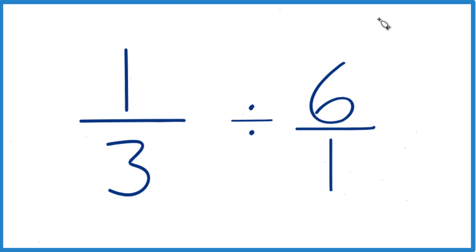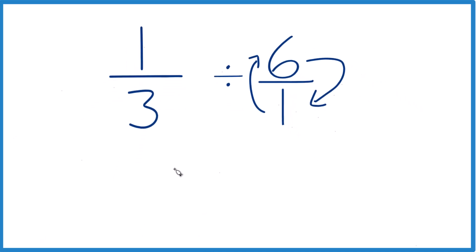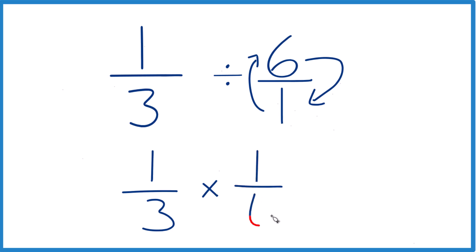Next, I'm going to take the reciprocal of six over one. So I take the numerator and move that down to the bottom, and the denominator comes up to the top. That way, I can say one-third, and instead of dividing, I'm going to multiply by the reciprocal of six over one — so one goes on top, six on the bottom: I have one-sixth.